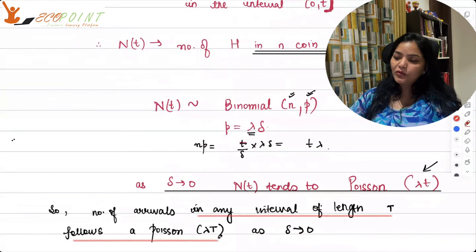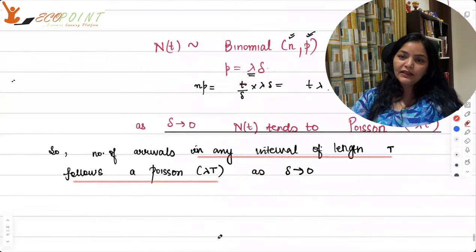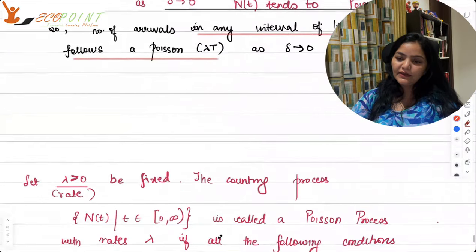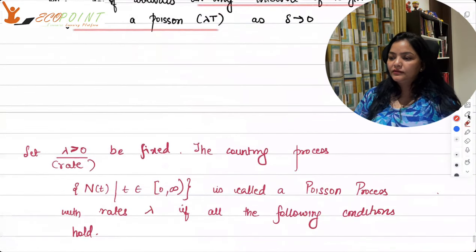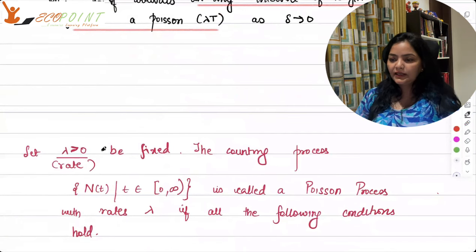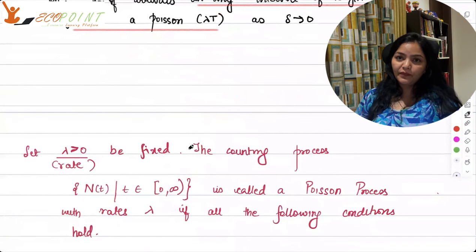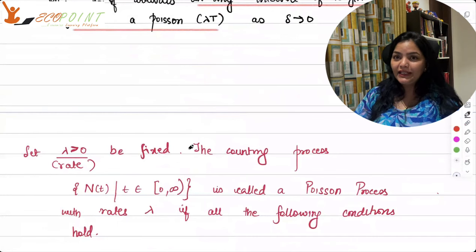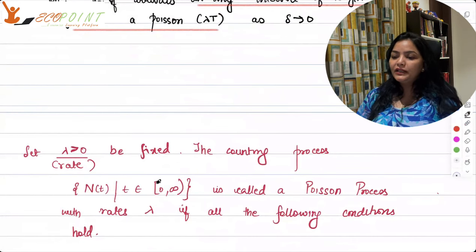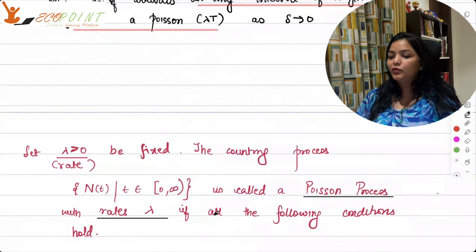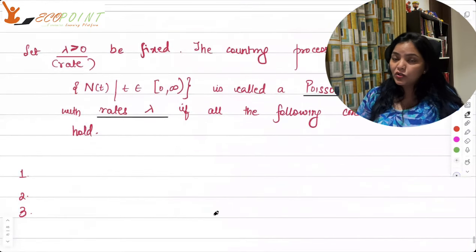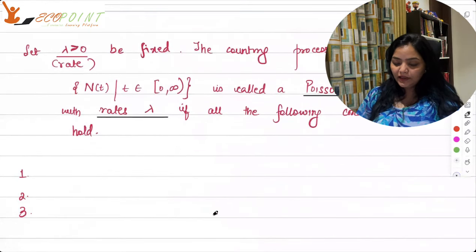Now this is poison process. How do we use this? And how do we formally write it? So let lambda, that's the rate. Let it be fixed, greater than 0. Let it be fixed. The counting process of this nt, which we have given the number of occurrence, where t goes from 0 to infinity, is called poison process with rate lambda. If all the following conditions hold.